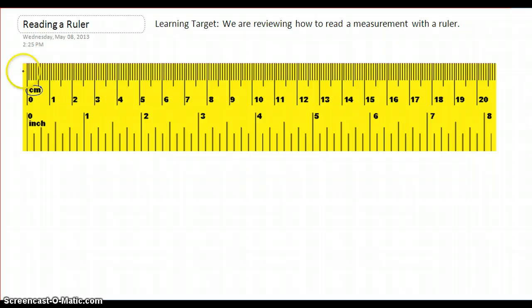And again, the same thing that we did before is count all the little hash marks. So this would be one, two, three, four, five, six, seven, eight, nine, ten.